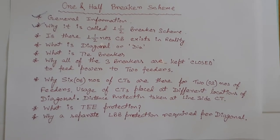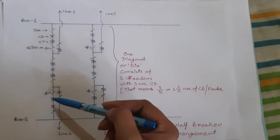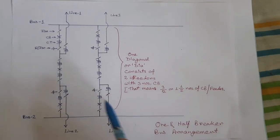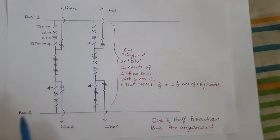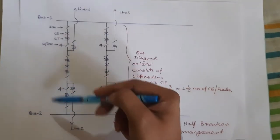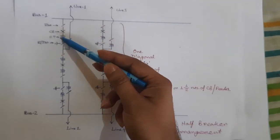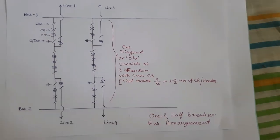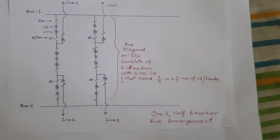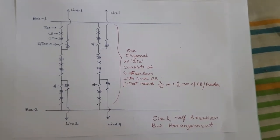Why is it called the one and half breaker scheme? This scheme is called the one and half breaker scheme because there are three circuit breakers for two feeders. This is a simple substation bus arrangement with two main buses and four feeders. For each set of two feeders, there are three circuit breakers. So for each feeder, three divided by two — that is one and half — circuit breakers are allotted. That is why it is called the one and half breaker scheme.